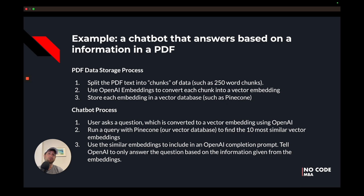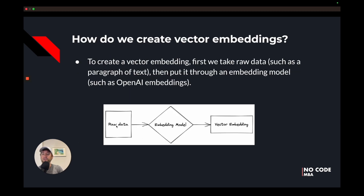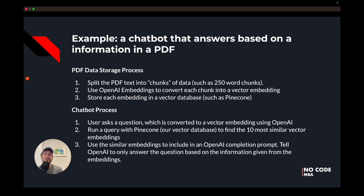In the chatbot process, the user asks a question. We take that question and convert it into a vector embedding using OpenAI. We do the same thing with those chunks of data — put each through the embedding model to get a vector embedding, then store each in the vector database. When we have our question converted into a vector, we run a query with Pinecone — the vector database — and return the 10 most similar vector embeddings, giving us the most highly related information from that PDF.